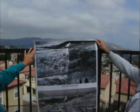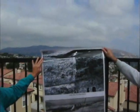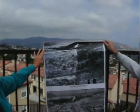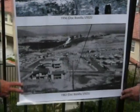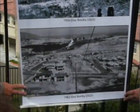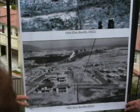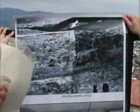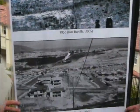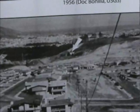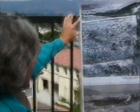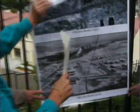That photograph was taken by Doc Bonilla in 1956 from exactly where we're standing now. In 1962, he took another photograph from the very same place — and that's what it looked like. What you can get a sense of from comparing these two photographs, taken in exactly the same spot, is how much earth they moved to put in this development. You can actually still see some of these very houses down there if you look carefully.